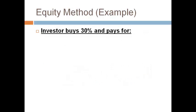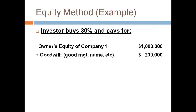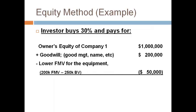The investor is willing to pay for what is on the balance sheet and things that are not reported on the balance sheet. The amount paid — fair market value — will differ from what is reported on the balance sheet because of the goodwill and the equipment. The difference in the equipment will be eliminated over the useful life of the equipment, while goodwill is never eliminated.